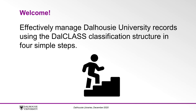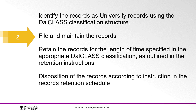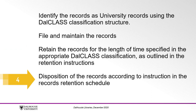The four steps for managing records at Dalhousie University are as follows: 1. Identify the records as university records using the Dal class classification structure. 2. File and maintain the records. 3. Retain the records for the length of time specified in the appropriate Dal class classification as outlined in the retention instructions. 4. Disposition of the records according to instruction in the records retention schedule.